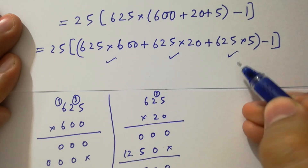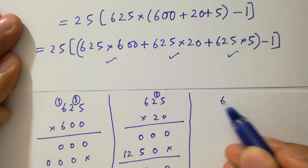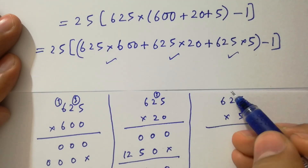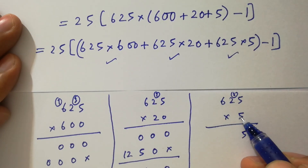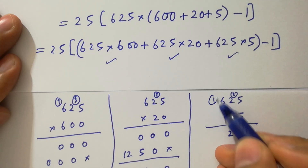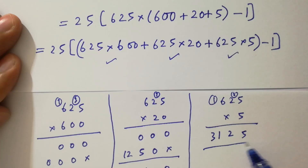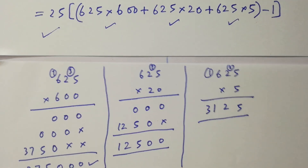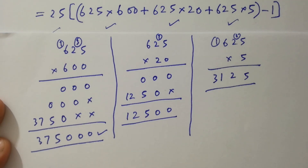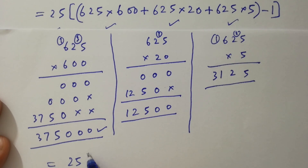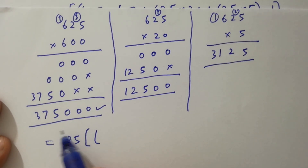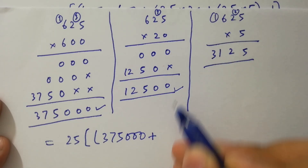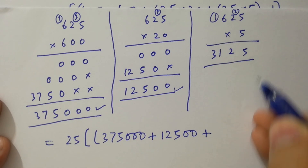For 625 times 5: 5 times 5 is 25, carry 2; 5 times 2 is 10 plus 2 is 12, carry 1; 5 times 6 is 30 plus 1 is 31. So 625 times 5 equals 3125. Now we have 375,000 plus 12,500 plus 3125.